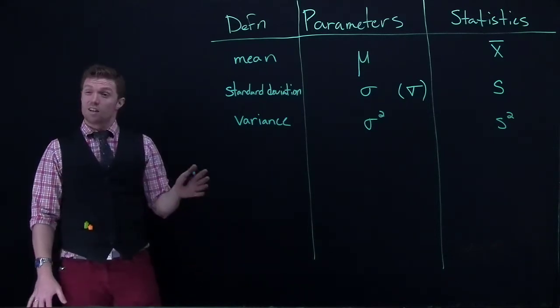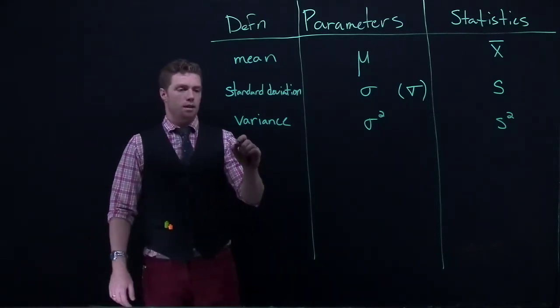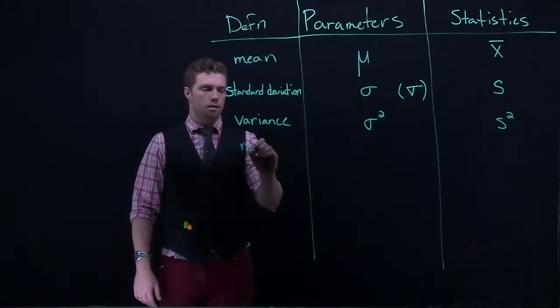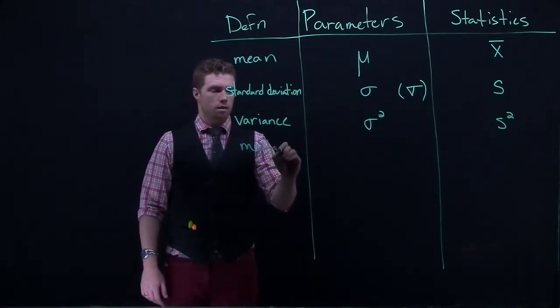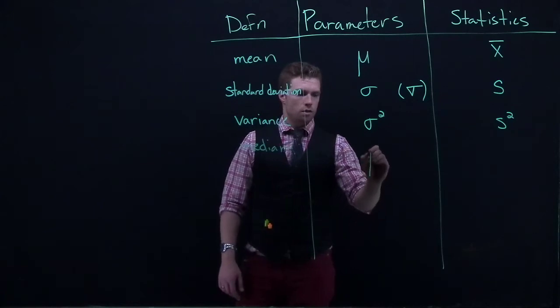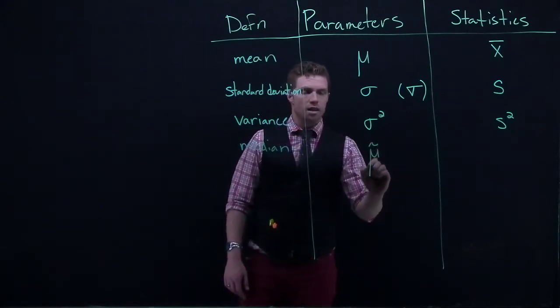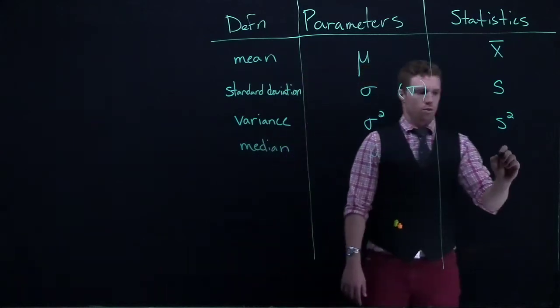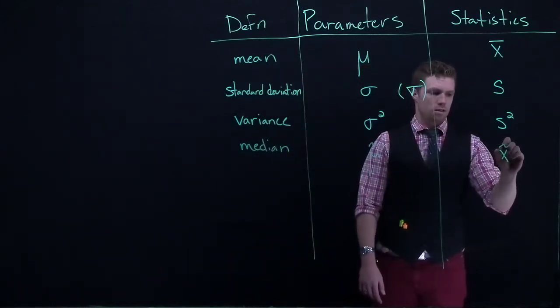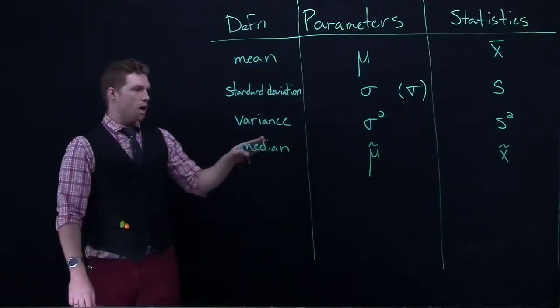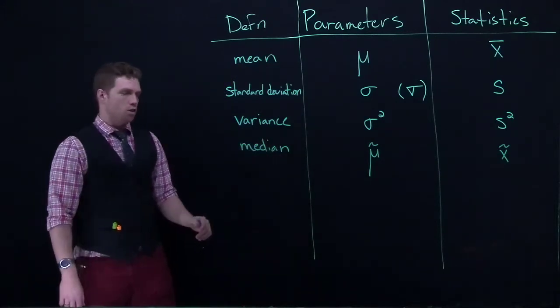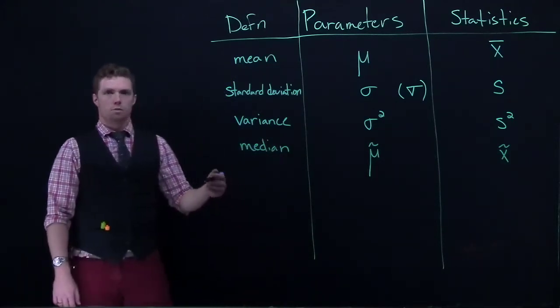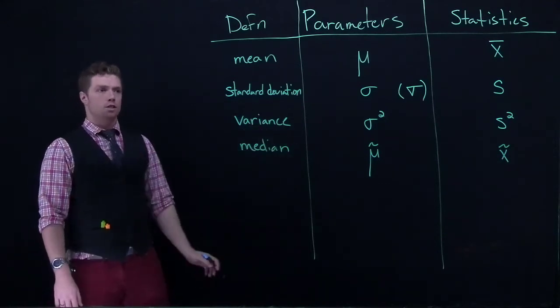You'll also see one, it's less often that you'll see it. But if we are talking about the median, you'll see this as mu tilde with a little squiggle on top. And if you can probably guess, it's x tilde for the median. That one's pretty uncommon. You probably won't see it in most introductory statistics books, but it does pop up in literature at times.